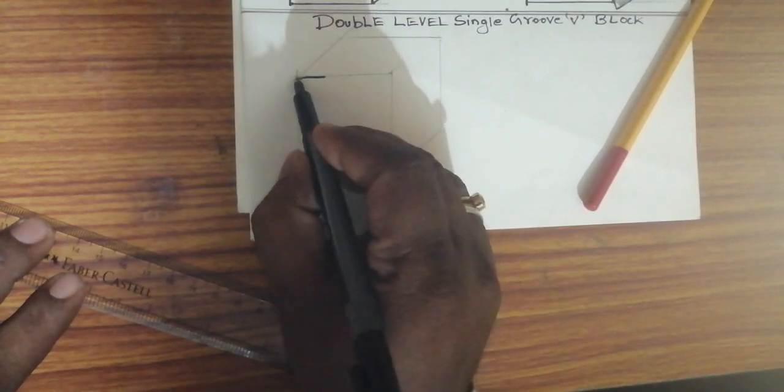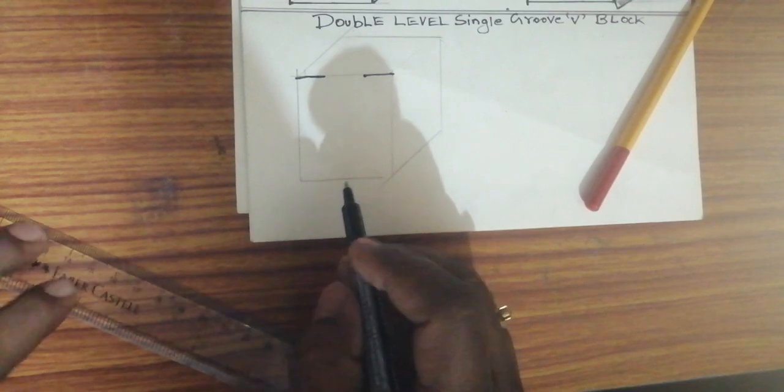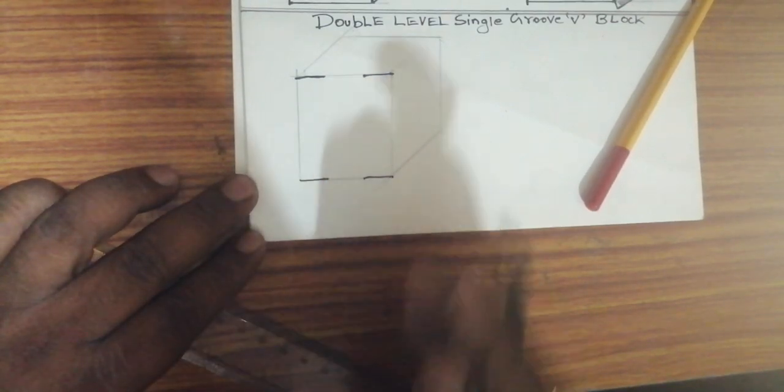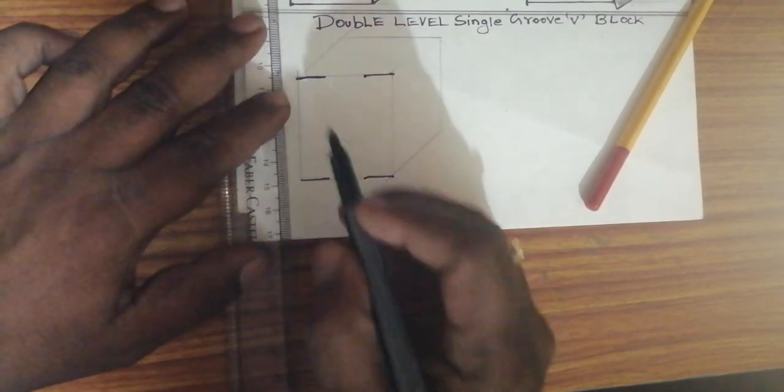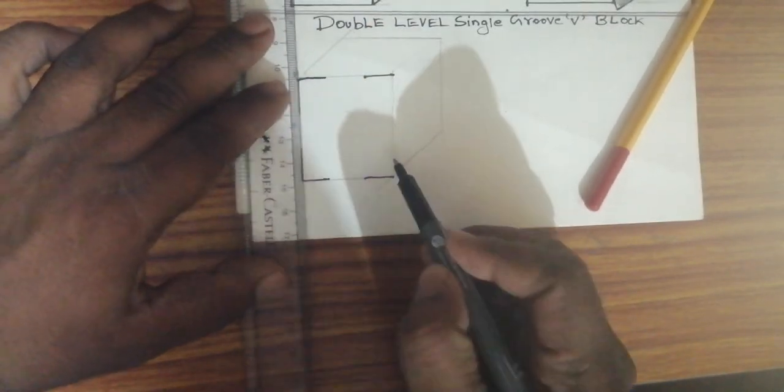10mm here, 10mm here, 10mm, and here 10mm. After that, do like this. Straight lines will come like this.